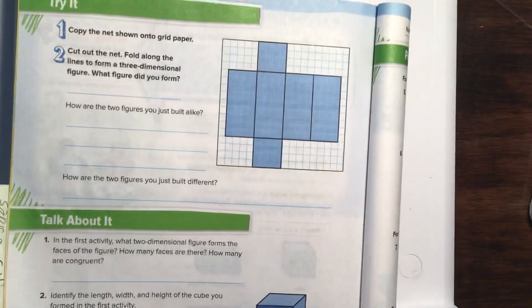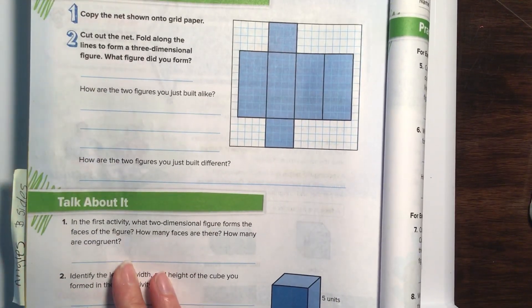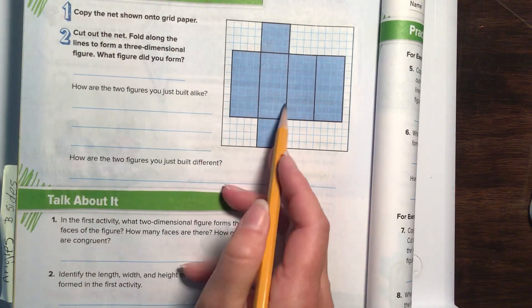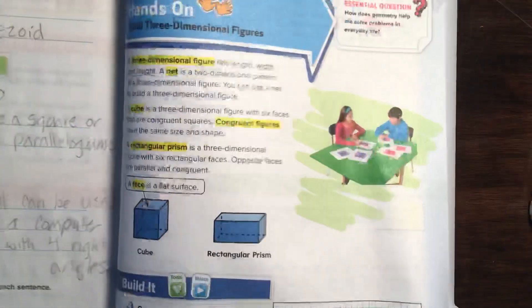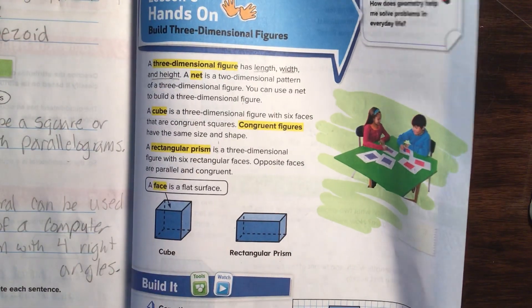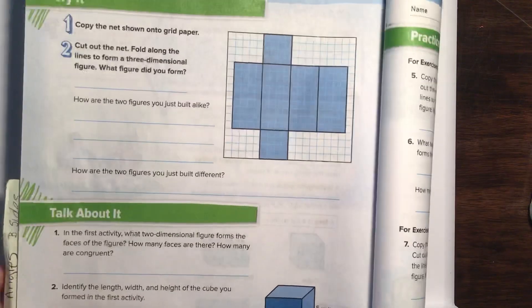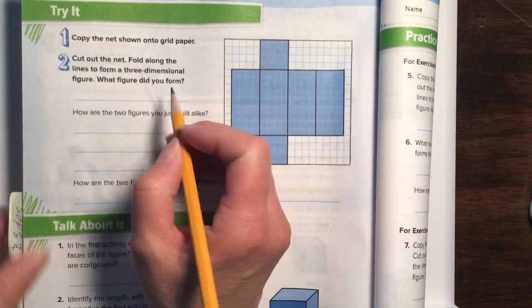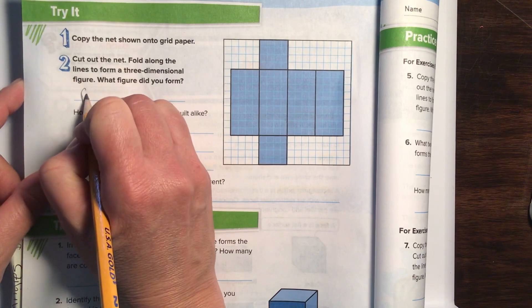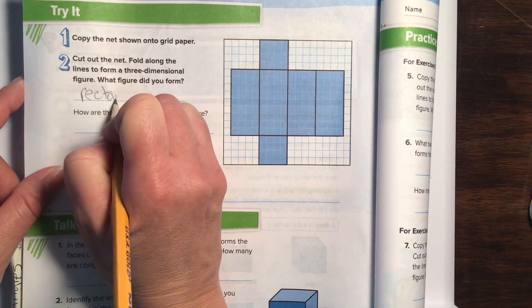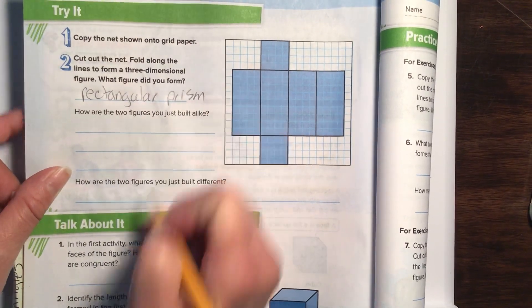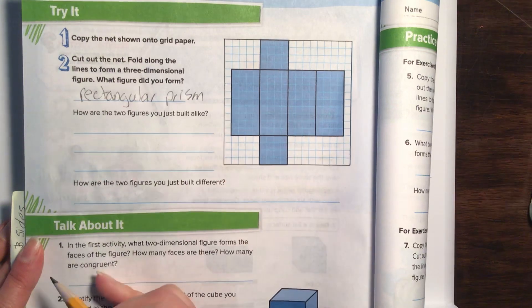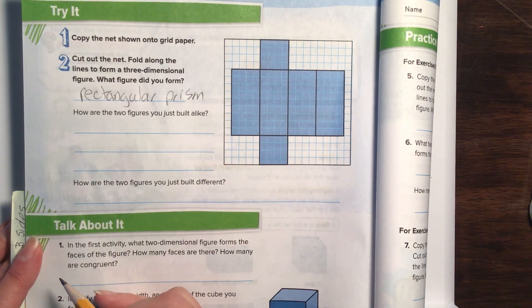They want this copied onto the graph paper. And if we were to fold this, which shape would it make? Would it make our cube or our rectangular prism? Looking at that, you can probably see with these long block shapes that it would make a rectangular prism. And if you really want to, you're welcome to cut that out and put that together. But I'm okay if you don't.